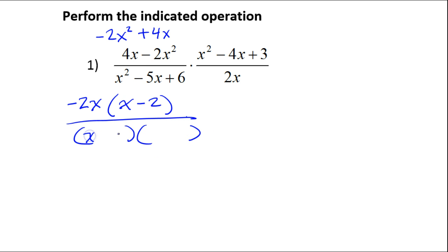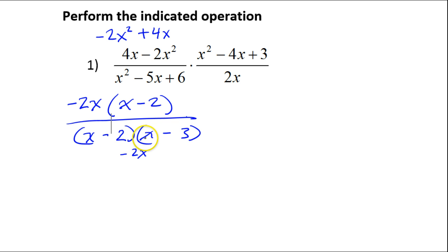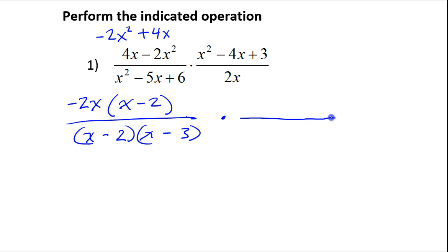Now I'll factor the denominator. x squared factors as x times x, and 6 is probably going to be 2 times 3. To make negative 5, both would have to be negative, giving inner of negative 2x and outer of negative 3x — together they make negative 5x. And negative 2 times negative 3 is positive 6.